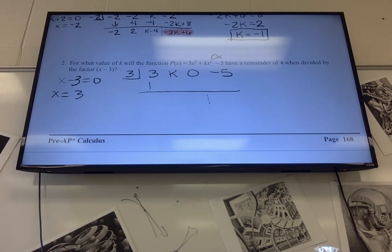Bring down the 3. I get 9. Add those, I get k plus 9. 3 times k plus 9, I got to distribute. So it's 3k plus 27. Add those, it's 3k plus 27. Multiply by 3. Again, I have to distribute. So it's 9k plus 81. When I add those, I can add the negative 5 and the 81, which really means I subtract. So that's 9k plus 76.